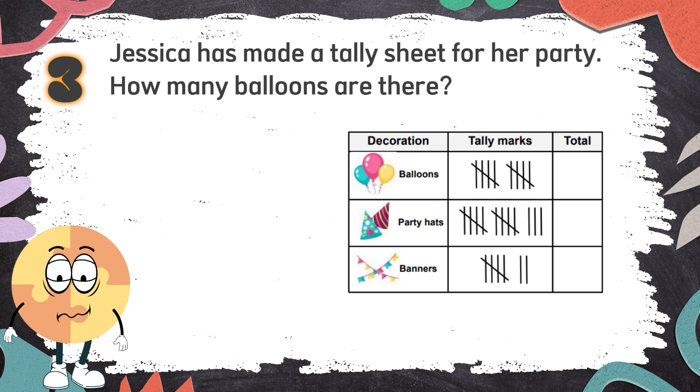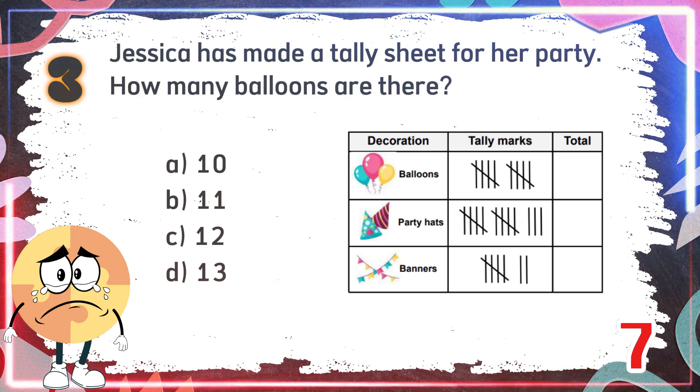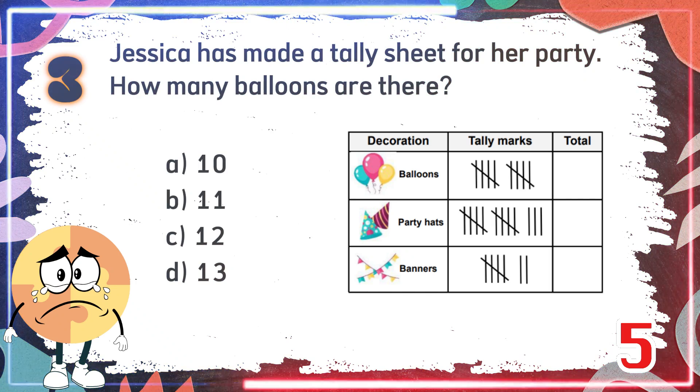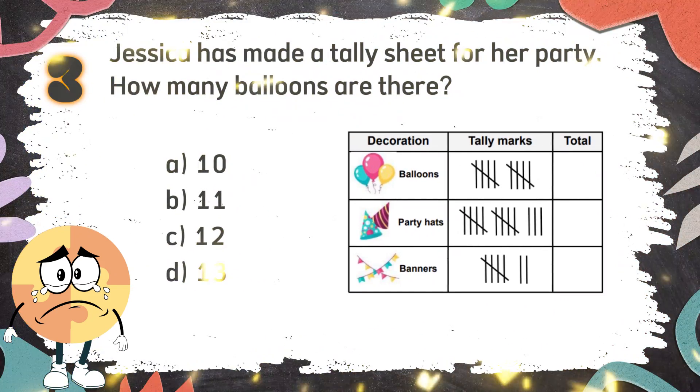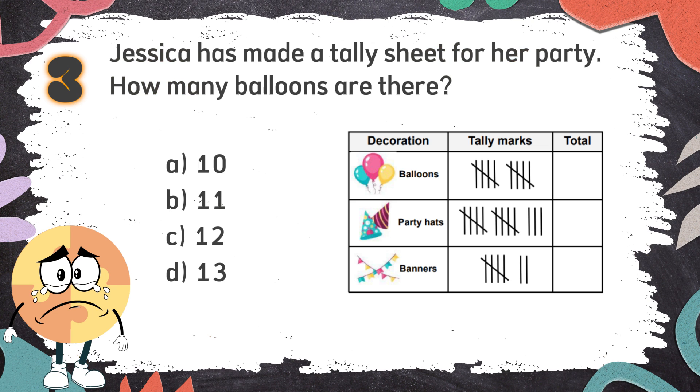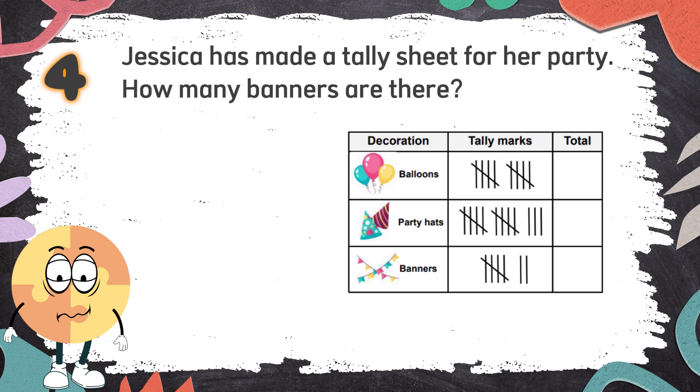Number 3: Jessica has made a tally sheet for her party. How many balloons are there? How many banners are there?